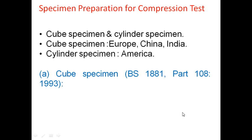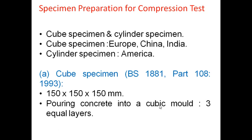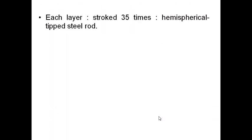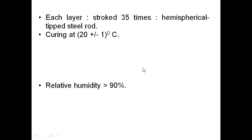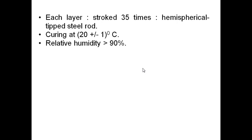Cube specimen as per British Standard 1881 Part 108, 1983, should be 150mm × 150mm × 150mm. Pour the concrete into cubic mold in three equal layers. Each layer has to be stroked 35 times by a hemispherical tipped steel round rod. It has to be cured at 20±1°C, with relative humidity maintained greater than 90%.